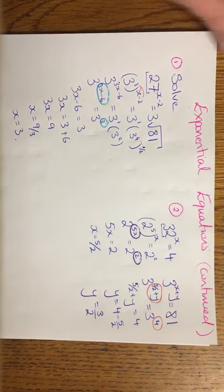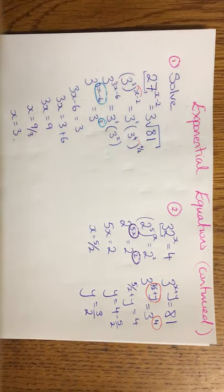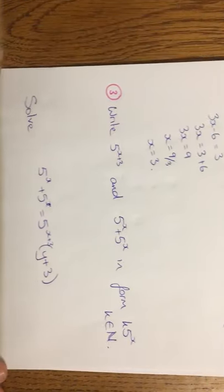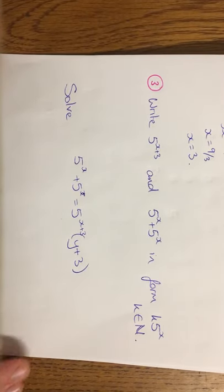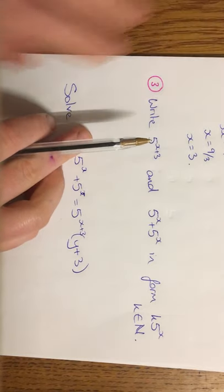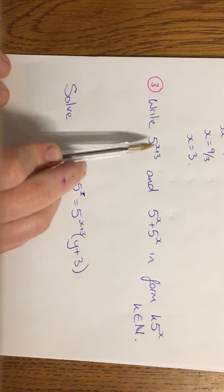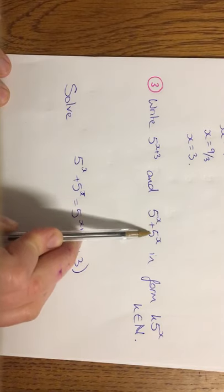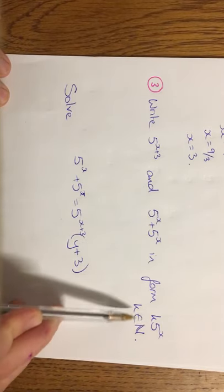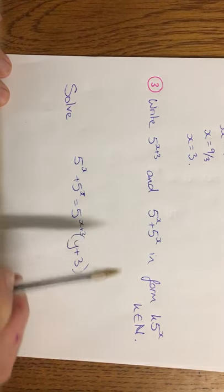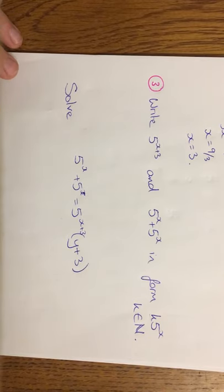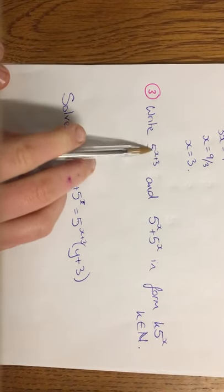So they are similar to the ones that we were doing last week. It's more so the substitution ones I wanted to show you. Moving on then, next example, number 3. So write 5 to the x plus 3 and 5 to the x plus 5 to the x in the form k by 5 to the x where k is an element of n. So that just means I want a normal number here multiplied by 5 to the x.